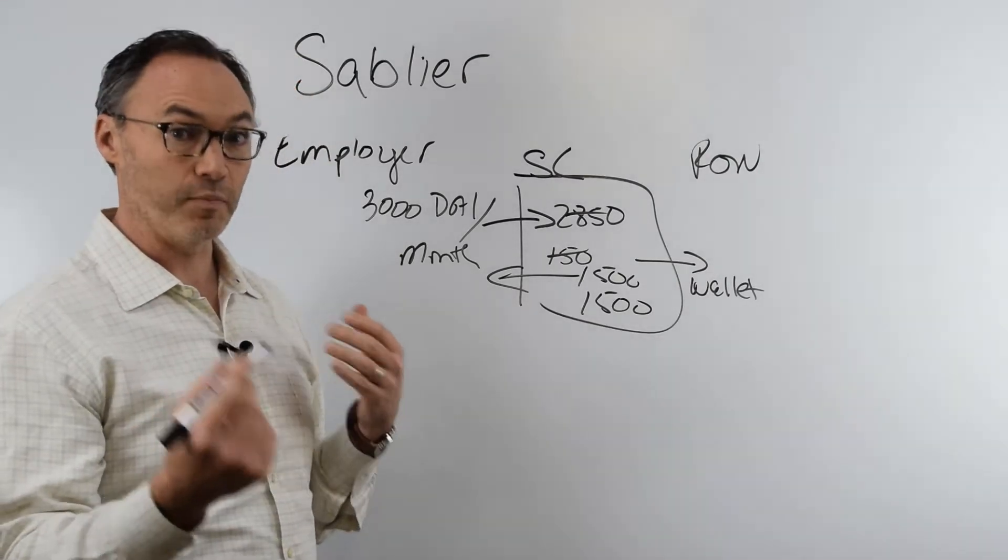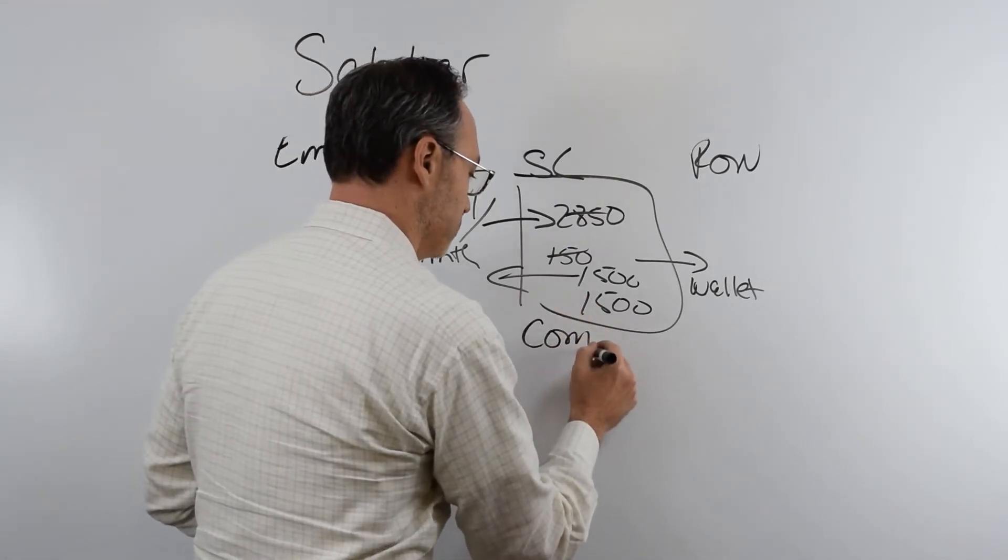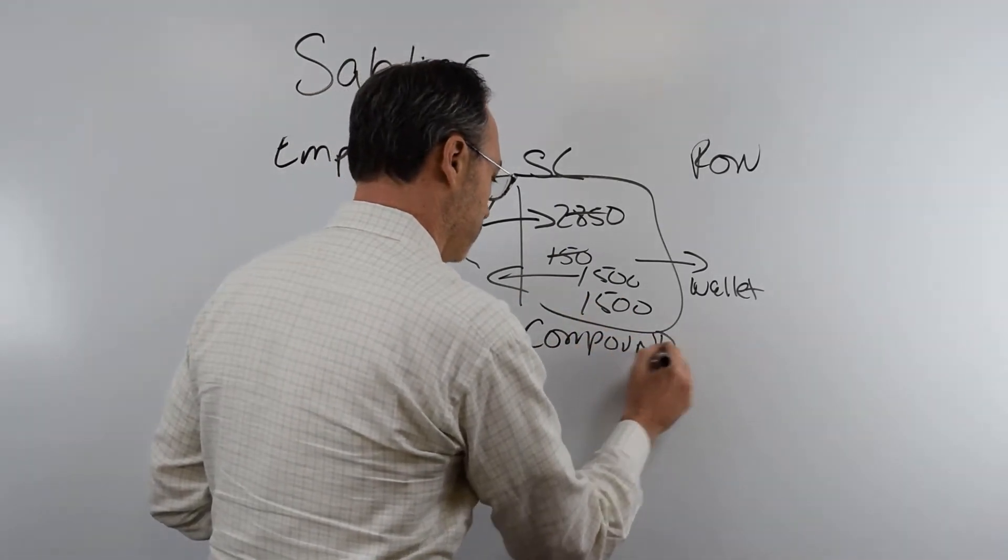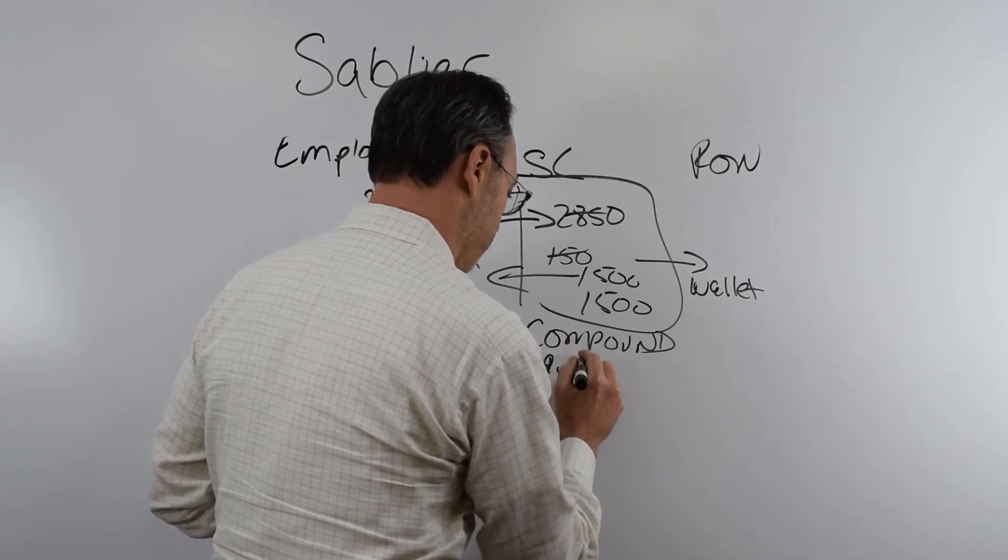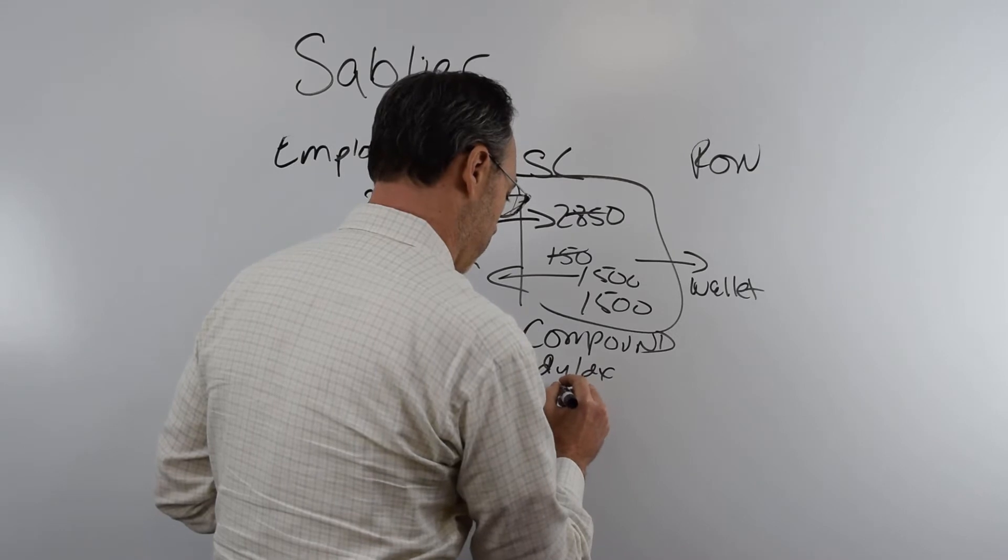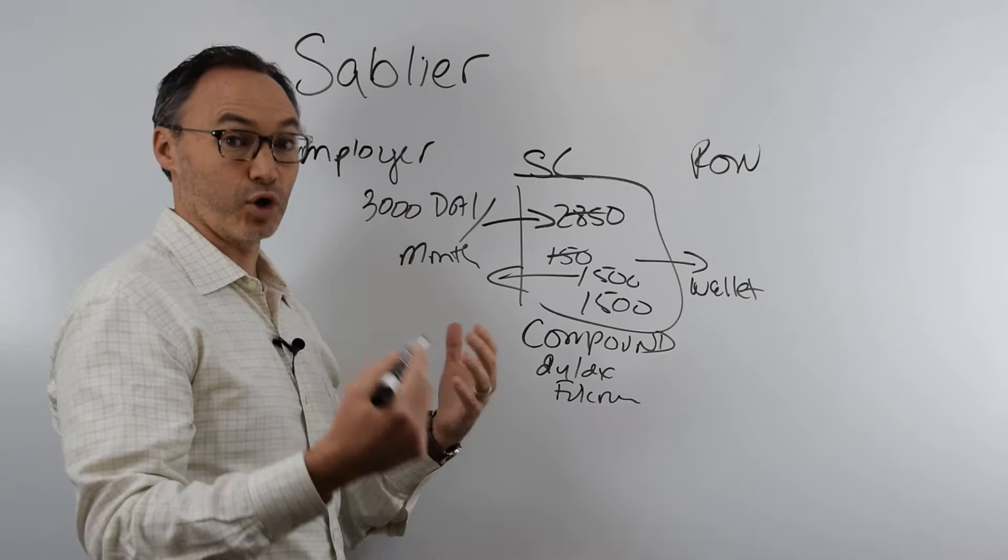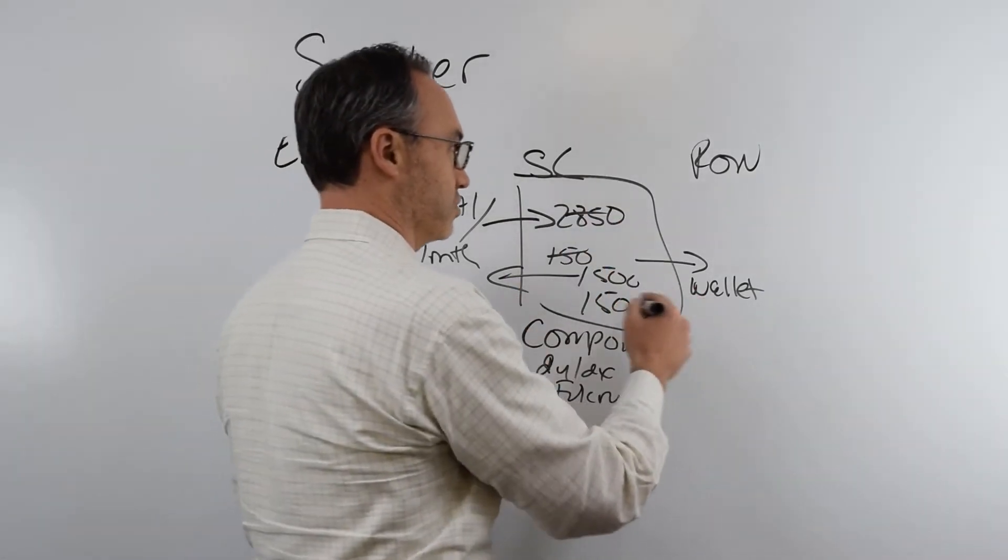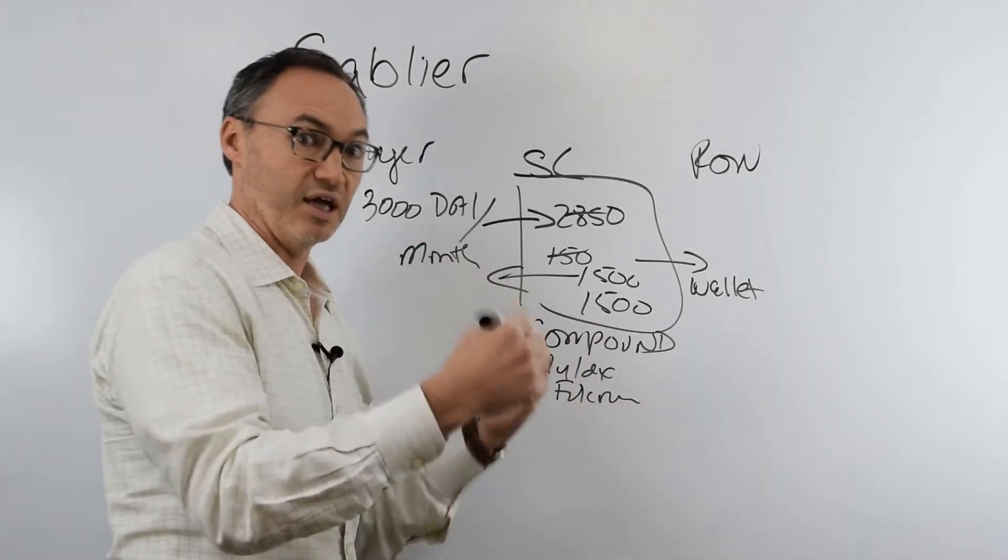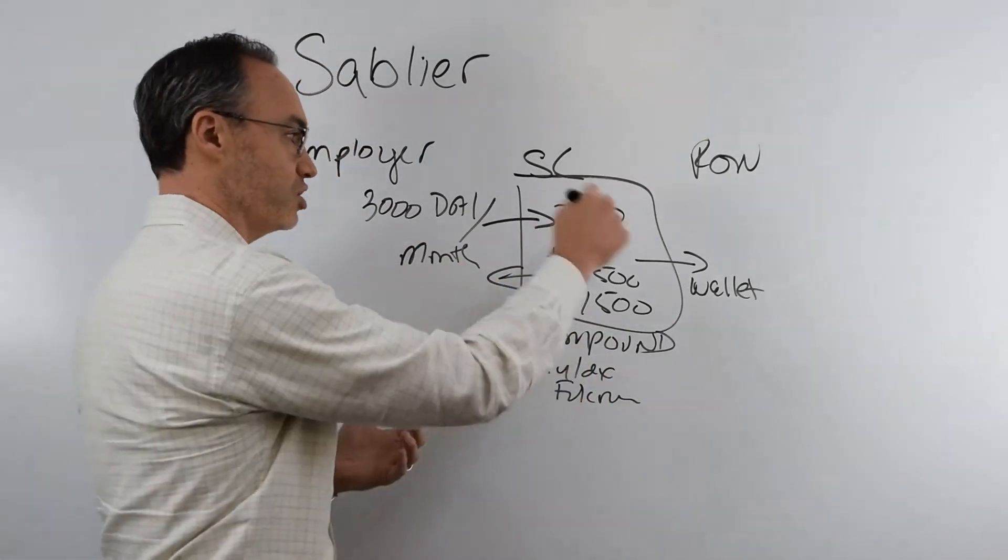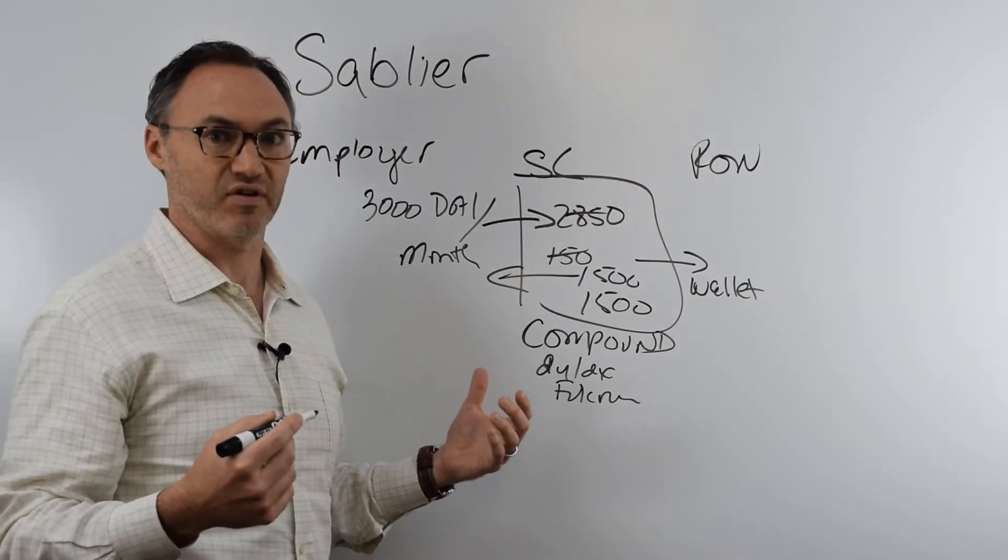The other thing they can do when we start talking about composability, is this can also get wrapped into a Compound or potentially like a DYDX or a Fulcrum loan potentially. And so this can essentially be earning some income, earning some interest as it's sitting in the smart contract or as it goes into Ron's wallet. So you can be earning interest on top of your salary in real time. And you can actually sit there and watch this tick, tick, tick. It took Paul maybe five minutes to set this up for me.